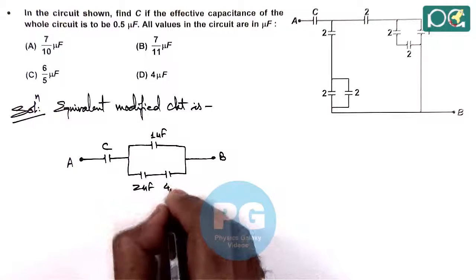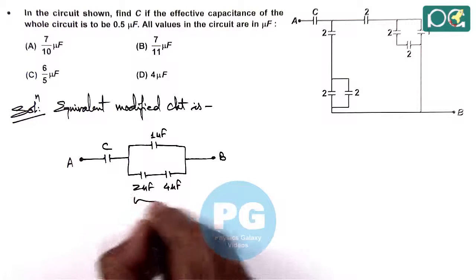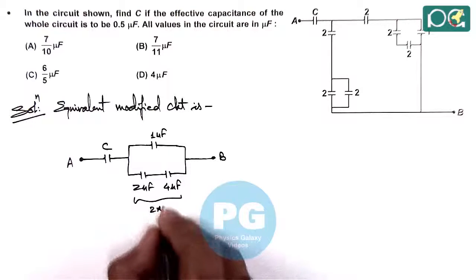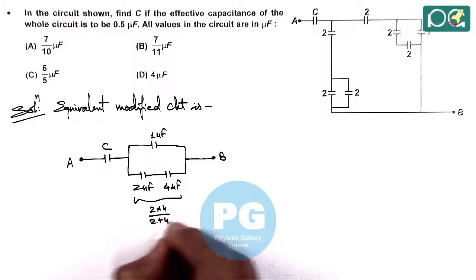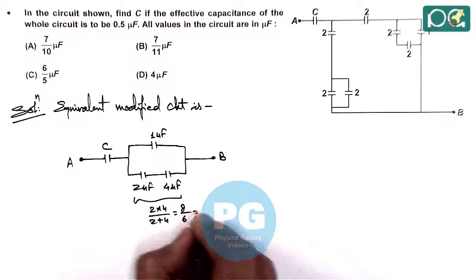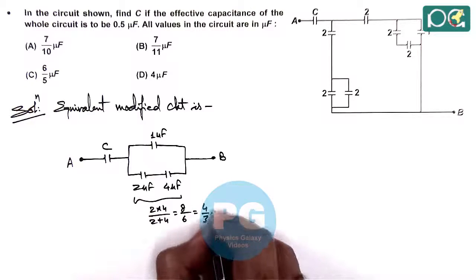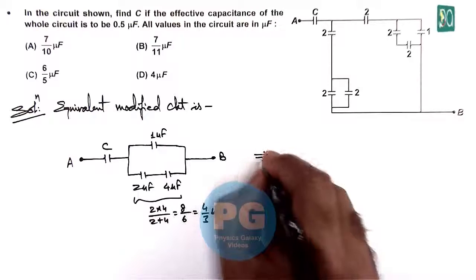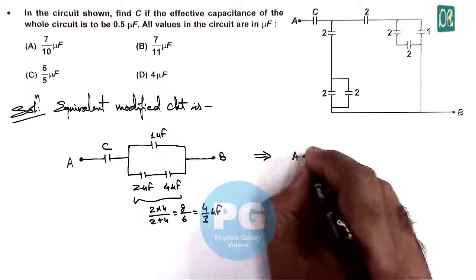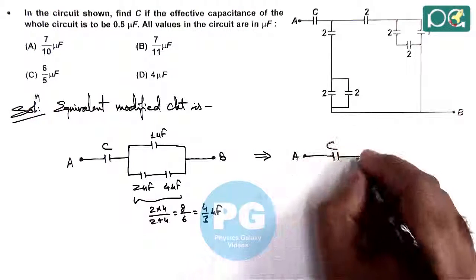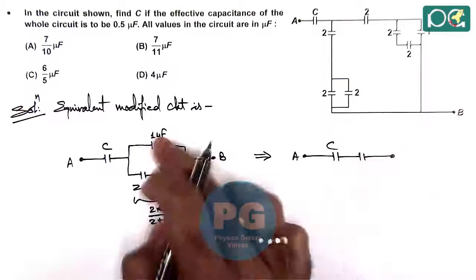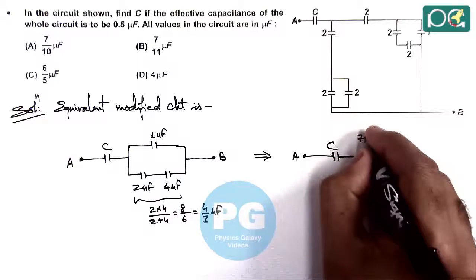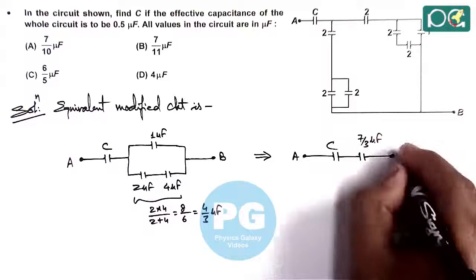This two microfarad and four microfarad in series becomes 2×4/(2+4), which is 8/6 or 4/3 microfarad. This is in parallel with one, so the equivalent circuit is C in series with 1 + 4/3 = 7/3 microfarad.